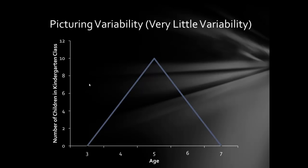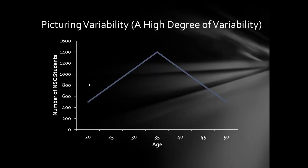Here's another example — instead of no variability, now we have very little variability. The mean age of children in a kindergarten class is five. There are a couple of four-year-olds and some six-year-olds, but for the most part it's all clustered around that mean age of five. We wouldn't get zero for a measure of variability, but it would be a relatively small number.